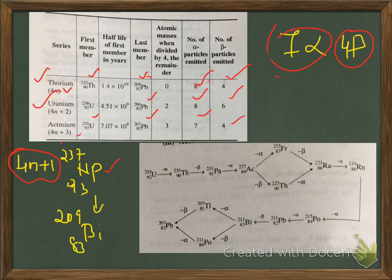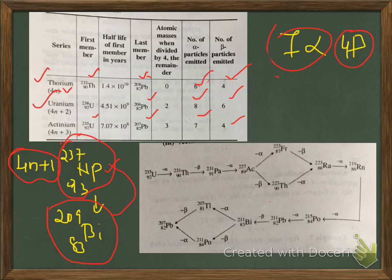In addition to these three naturally occurring series, we have 4n+1 as the artificial series, which has the parent element neptunium-237 at atomic number 93. The process continues until it reaches bismuth-209, which is the end element in the artificial series. So we can say that all the natural series end up with lead, while the artificial series ends in bismuth.